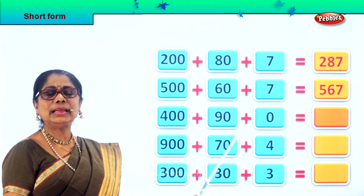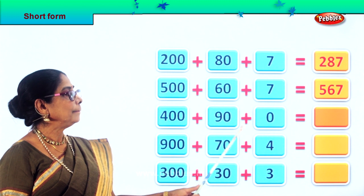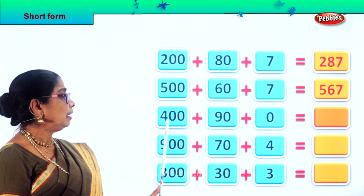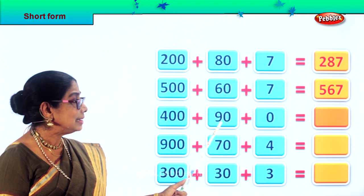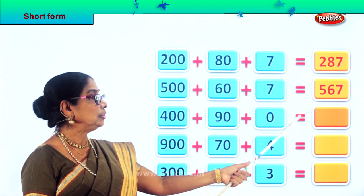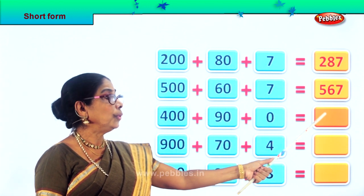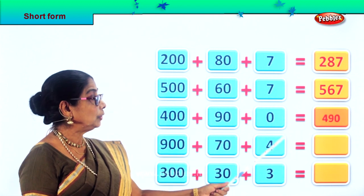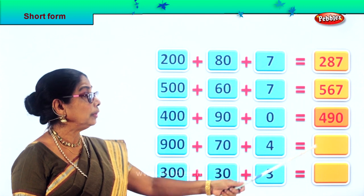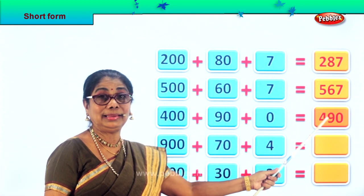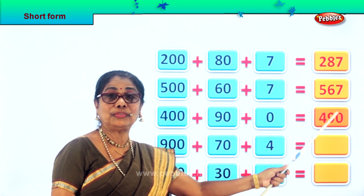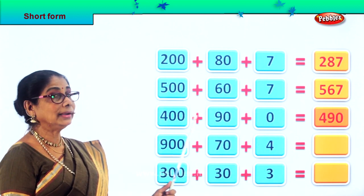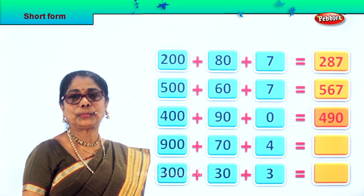What is the short form for 400 plus 90 plus 0 equal to? 4, 9, 0 — that is 490. Because there is 0 in the ones place. 490 is the short form for 400 plus 90 plus 0.